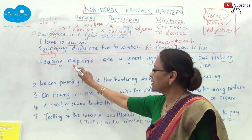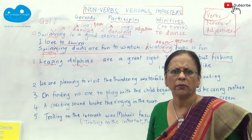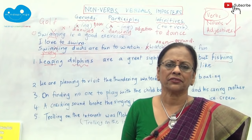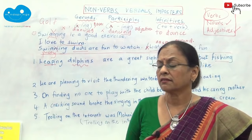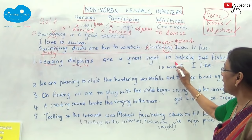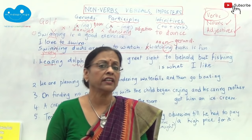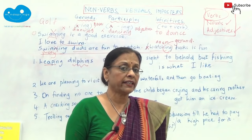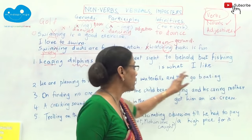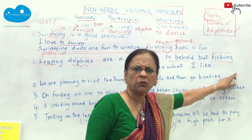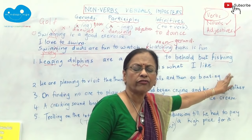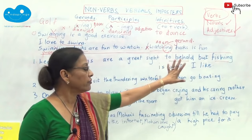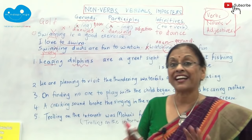So what is 'leaping dolphins'? I can see a noun there — 'dolphins' — so if there's a noun behind it, 'leaping' is an adjective, a participle. 'Singing birds,' 'dancing girls,' 'fighting boys' — all are adjectives because they tell you more about the noun. 'To behold' is an infinitive: to see — not a verb. 'Fishing' — is there a noun after it? Fishing boat? Fishing net? Nothing. Therefore 'fishing' is the name of an activity — it's a noun, a gerund.